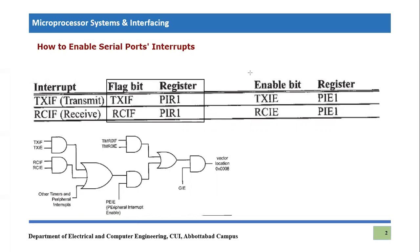These flag bits are like the flags present in timer zero or external interrupts. Similarly, they have their individual enable bits as well. Those bits are TXIE and RCIE, which are basically acronyms for Transmit Interrupt Enable and Receive Interrupt Enable.